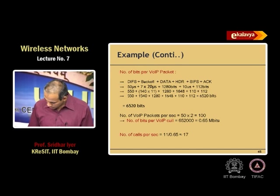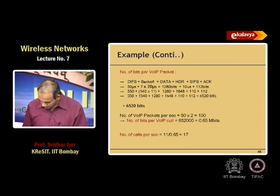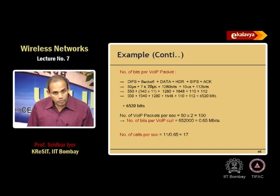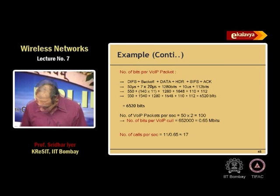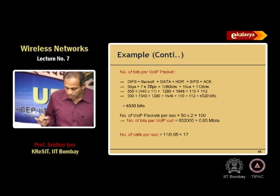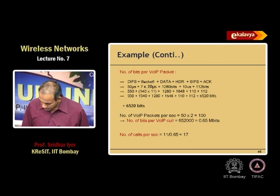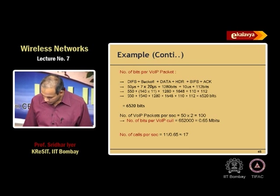Data was 1,280 bits per packet. We had 1,280 bits plus SIFS was 10 microseconds plus ACK is 112 bits. So now if we convert this entirely into bits — 1 microsecond corresponds to 11 bits.